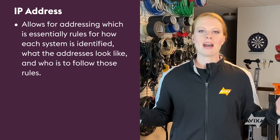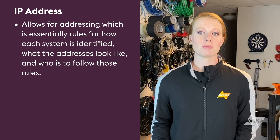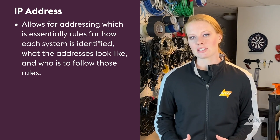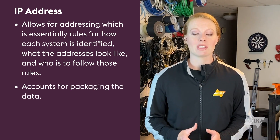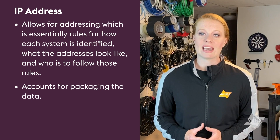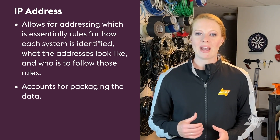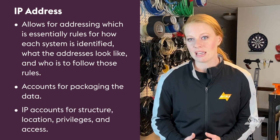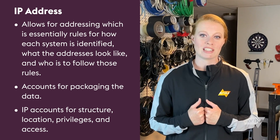Once these devices are actually connected, the device is assigned an IP address, or internet protocol address. Why do devices need two addresses? Just because a unit is present doesn't mean there is yet a structure to receive the data. IP allows for addressing — essentially rules for how each system is identified, what the addresses look like, and who is to follow those rules. It accounts for packaging the data, what information will be sent, how it will be sent via fragmenting, and what path the data will take from source to destination. In short, IP accounts for structure, location, privileges, and access, and addresses are limited to the size of the subnet in which they reside.